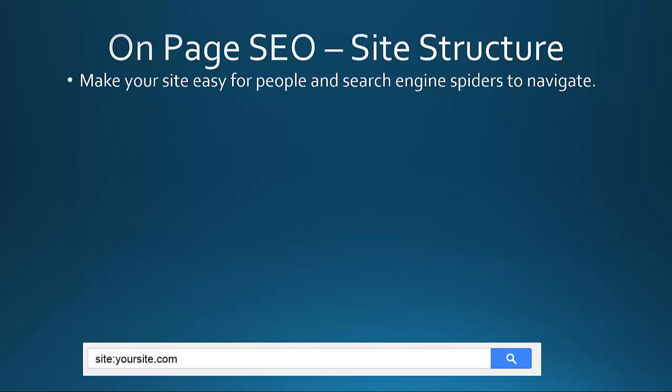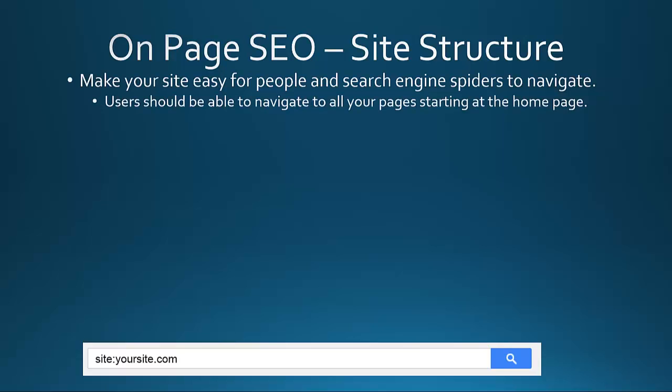In this video we will discuss more on-page SEO factors. We're going to start with site structure. You want to make your site easy for people and search engine spiders to navigate. Users should be able to navigate to all your pages starting at the home page. It should be very simple for them to get to all the pages on your site, or at least find all the content as easily as possible.